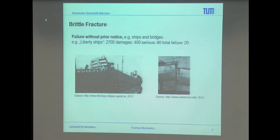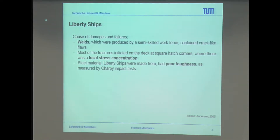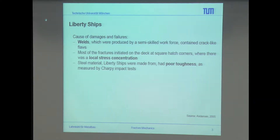What happened was that the material couldn't handle the stress and also the cold stresses. During action, they just broke in two. There was a famous person who bought the ships and could earn a lot of money, because he knew about this effect and was shipping in a warm area — the South Mediterranean Sea. Some other causes: welds produced by a semi-skilled workforce contained crack-like flaws. We always have some welded parts with some failure on the surface, and small cracks are always there.